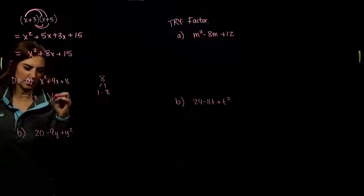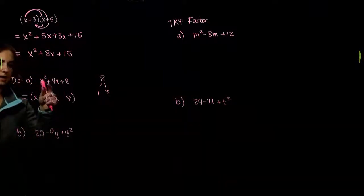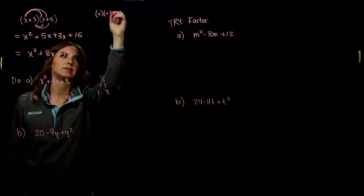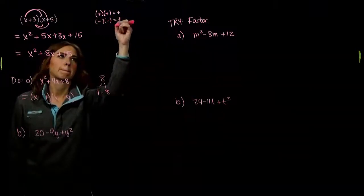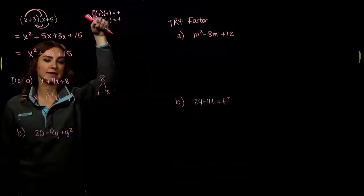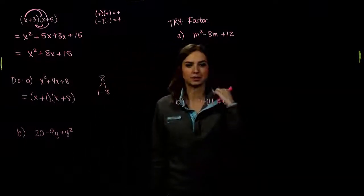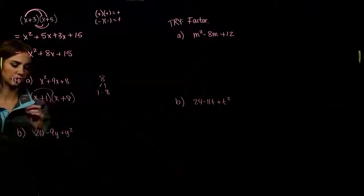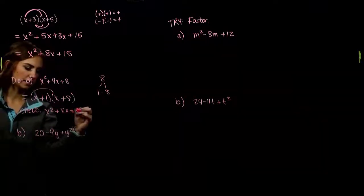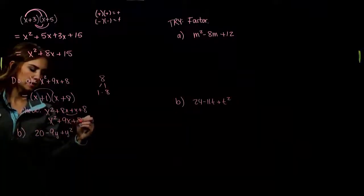There's a 1 out on the front, so we need to break it up into an x and an x. We need 8 and 1. To multiply two numbers and get a positive, they're either both positive or both negative. Since we also need them to add to be positive, both need to be positive. We can check by FOILing back out: x squared, outer 8x, inner x, last 8 — combine to get x squared plus 9x plus 8. Check!